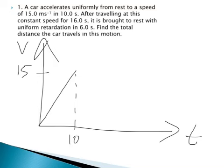Then in the second section, we're told it maintains a constant speed for another 16 seconds, so we need to add on 16 seconds to the 10, gives us 26, and just have a flat line of 15 to that point.